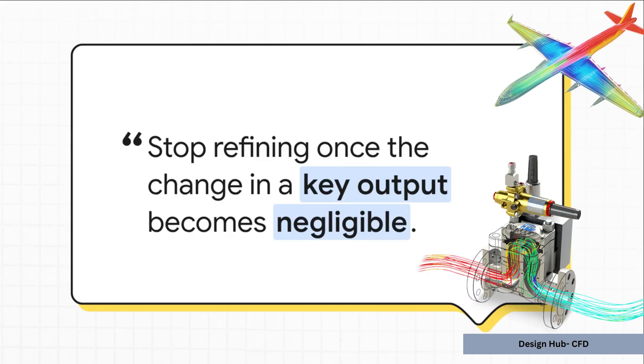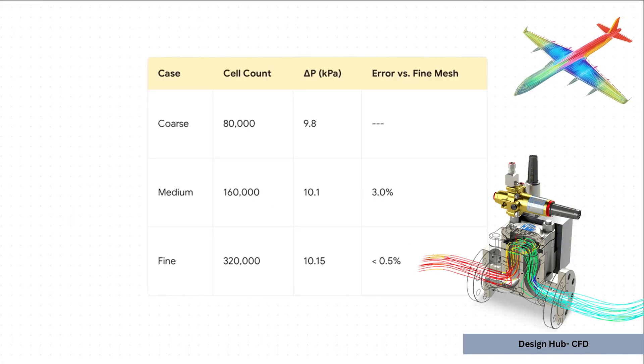This quote right here captures the entire principle of what's called a mesh independence study. This is the professional standard for validating a CFD model. The whole idea is to prove that your result, let's say it's pressure drop across a valve, isn't changing anymore, even if you make the mesh even finer. Your answer has become independent of the mesh.